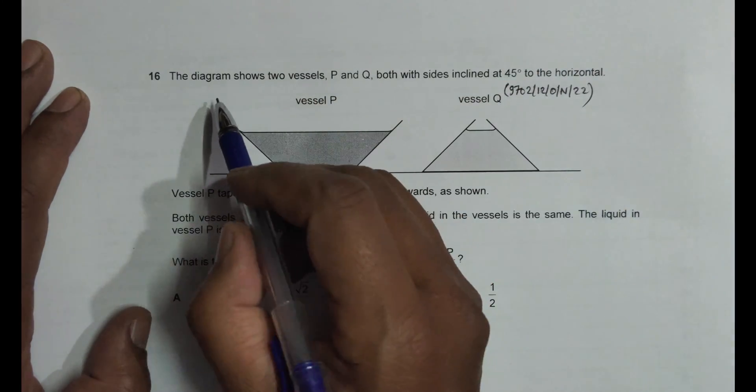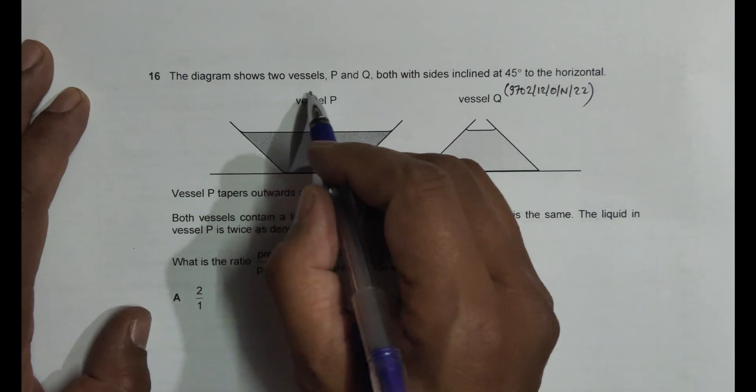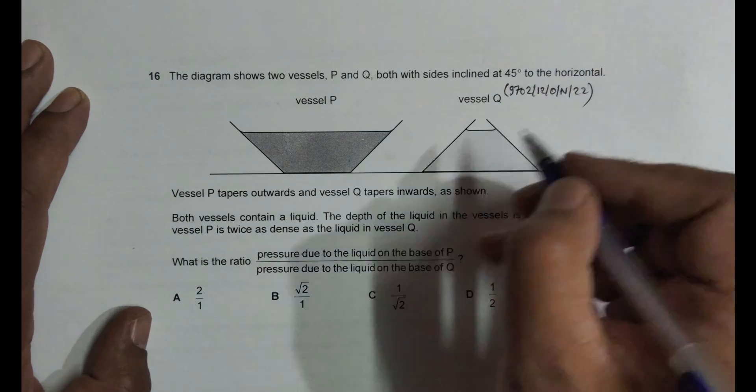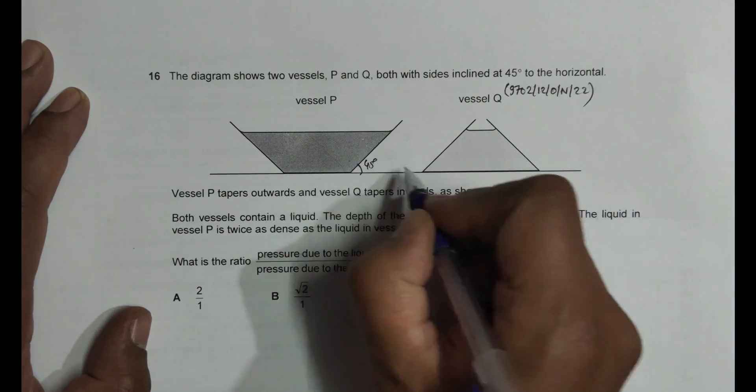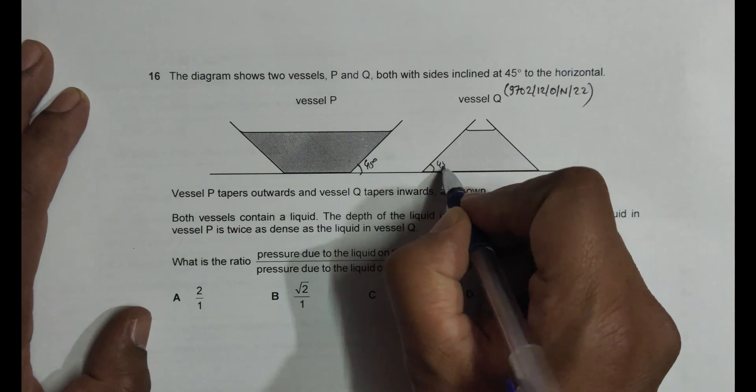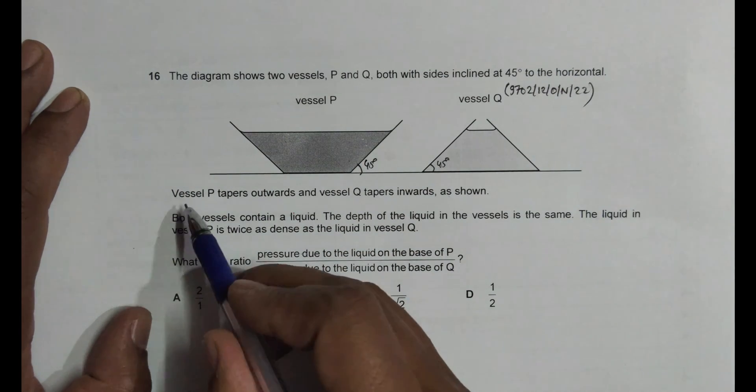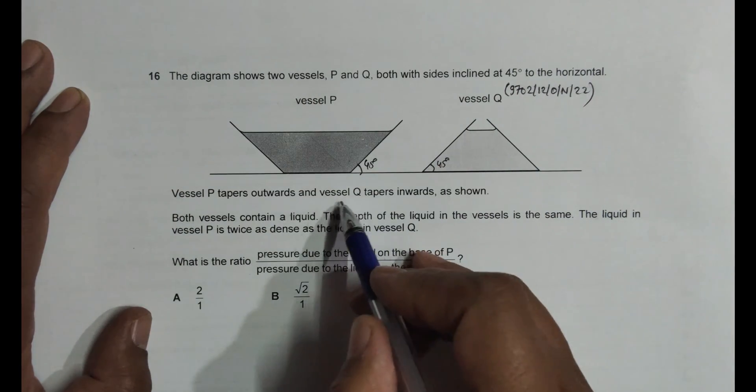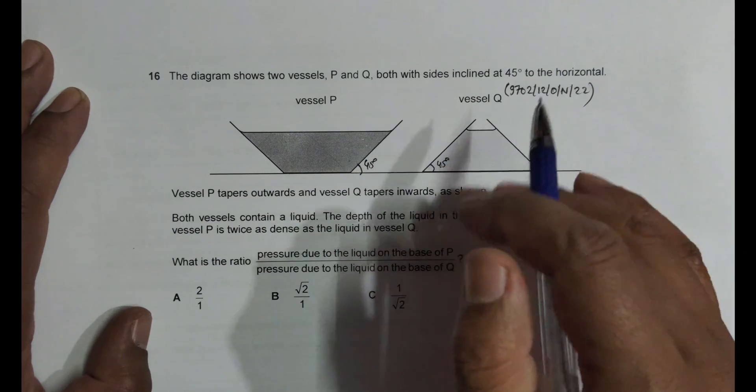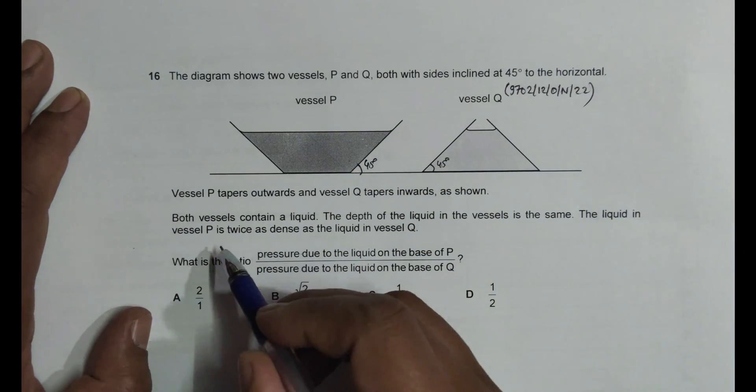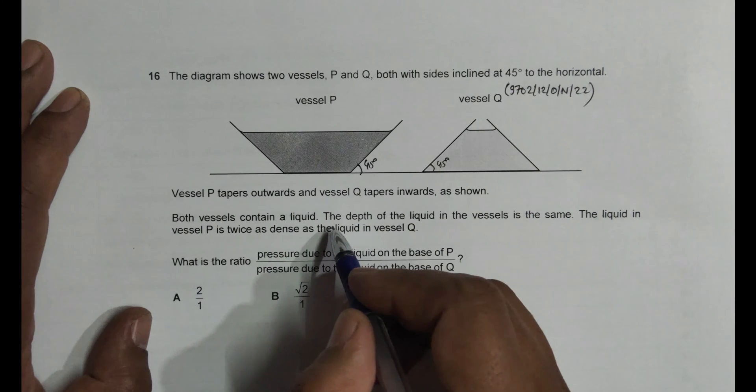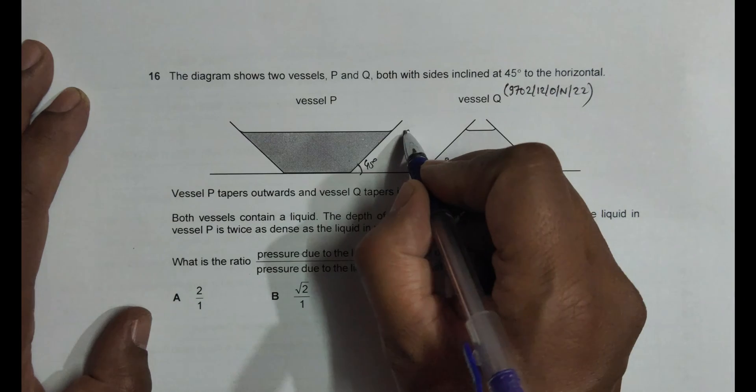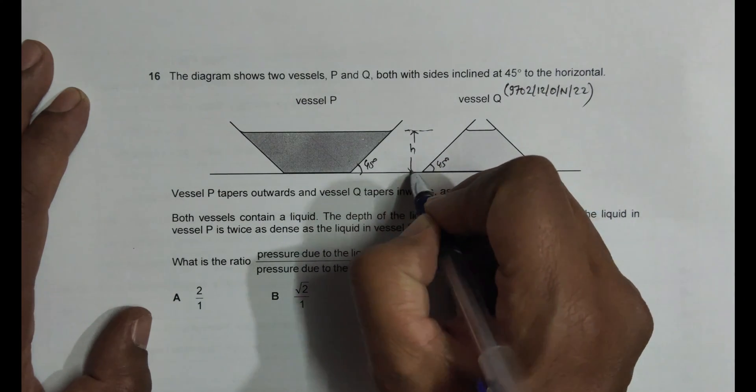The diagram shows two vessels P and Q, both with sides inclined at 45 degrees to the horizontal. Vessel P tapers outwards and vessel Q tapers inwards. Both vessels contain a liquid. The depth of the liquid in the vessels is the same, so this height is same in both.